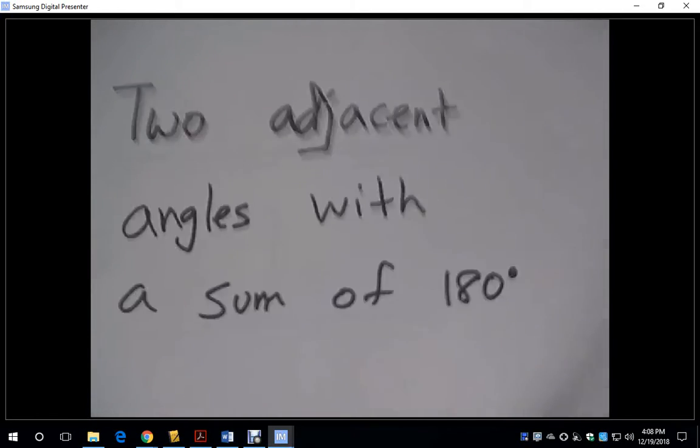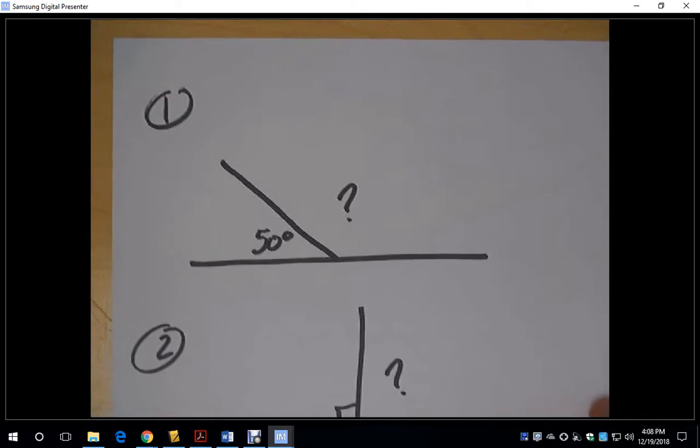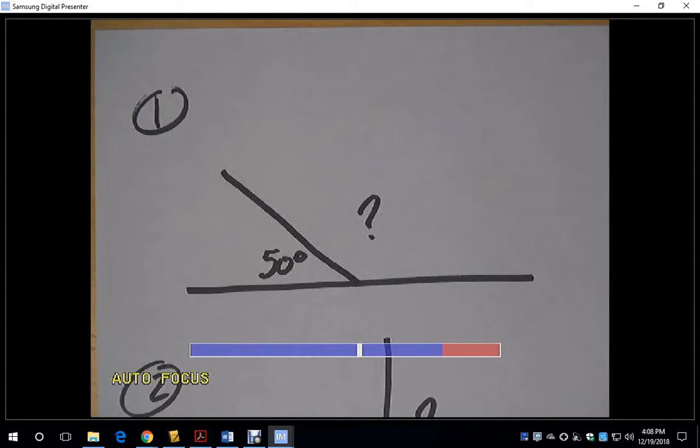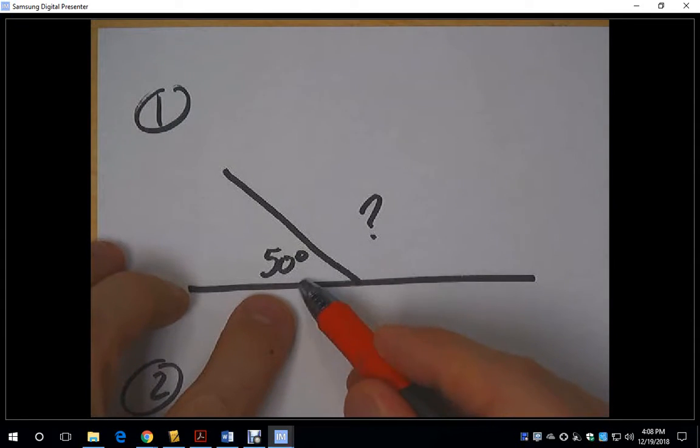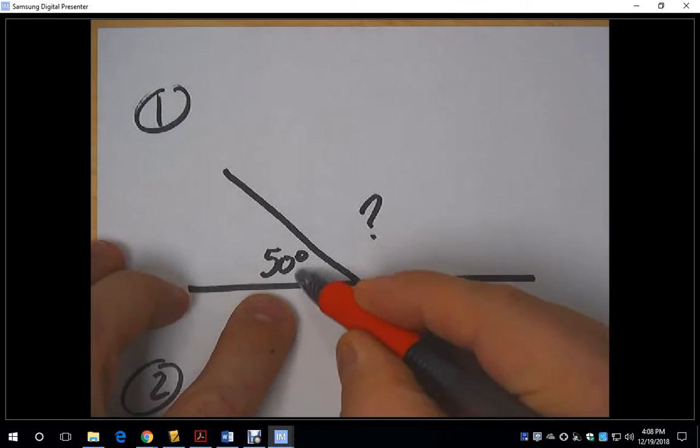Let's do a couple of examples. We have this example right here. We have a linear pair. We have this angle here. An angle is a rotation, so we have a rotation here of 50 degrees.